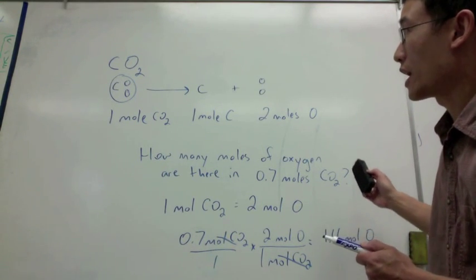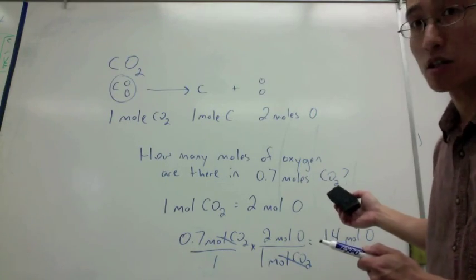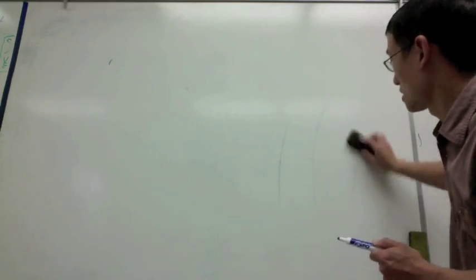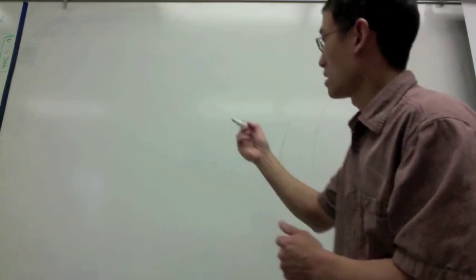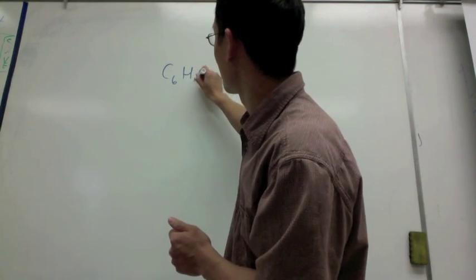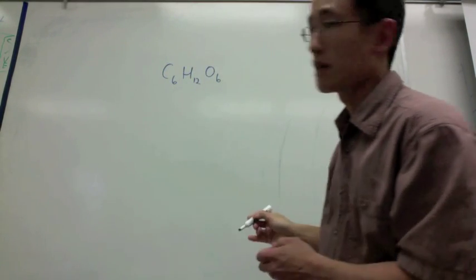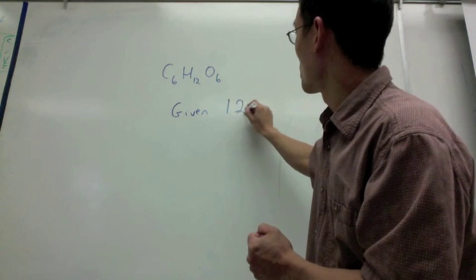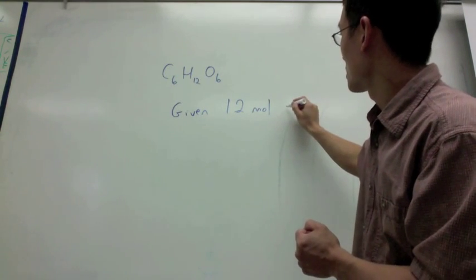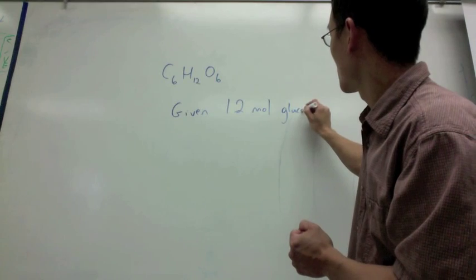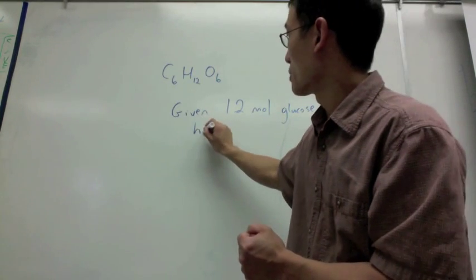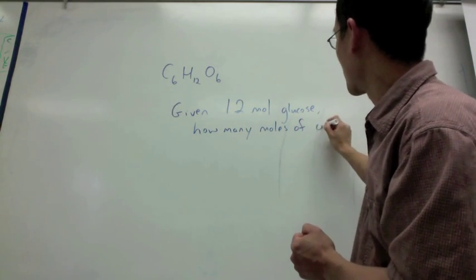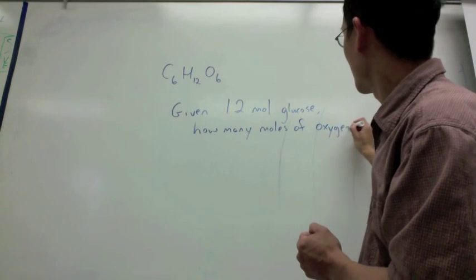Okay, now, what if I have a more complicated molecule, let's say, glucose? So, glucose is C6H12O6, and given, let's say, 1.2 moles of glucose, how many moles of oxygen are present?